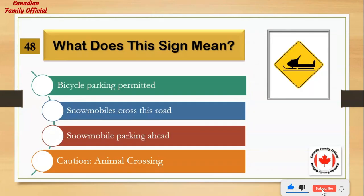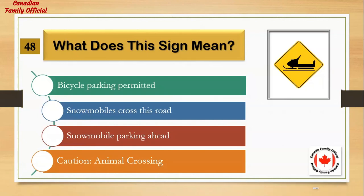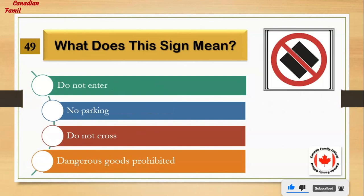What does this sign mean? Number 1: bicycle parking permitted. Number 2: snowmobiles cross this road. Number 3: snowmobile parking ahead. Number 4: caution animal crossing. And the answer is: snowmobiles cross this road.